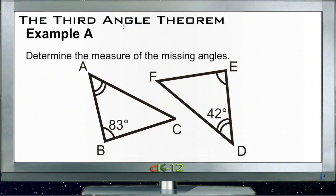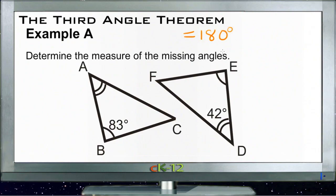Let's take a look at the examples for the third angle theorem. Example A asks us to determine the measure of the missing angles. The key concept we're working on is that all triangles equal 180 degrees, and that tells us if two angles are congruent on two triangles, then the third angle must be congruent too, because it still has to total 180 degrees.